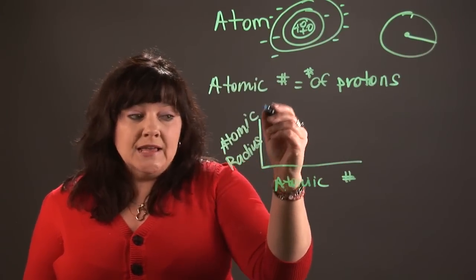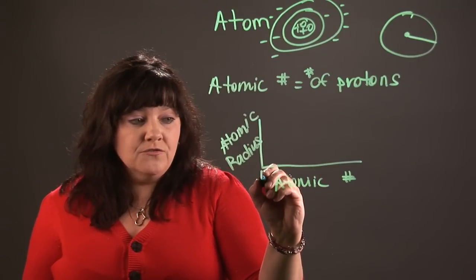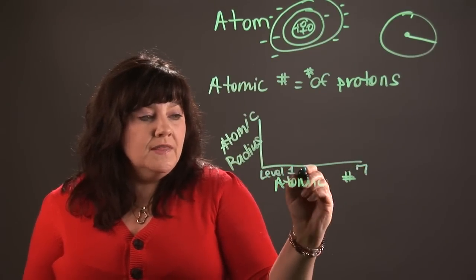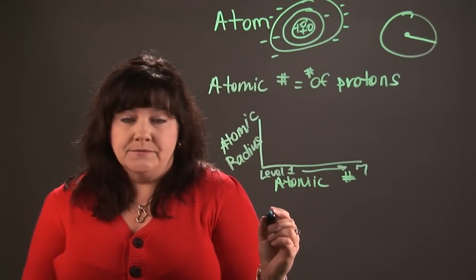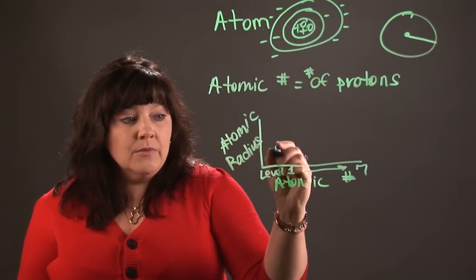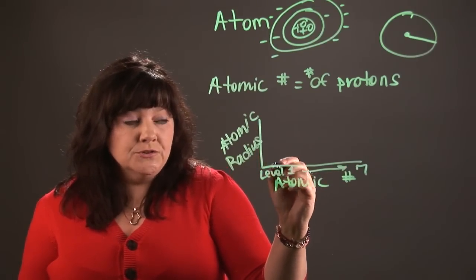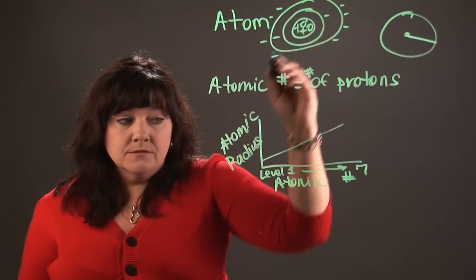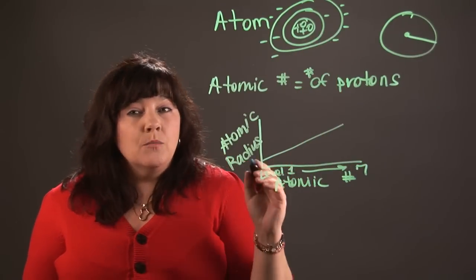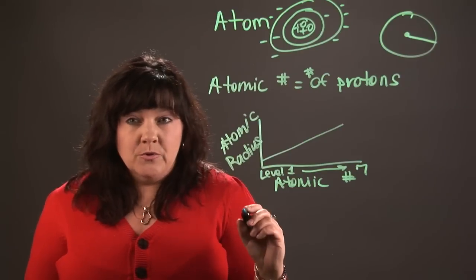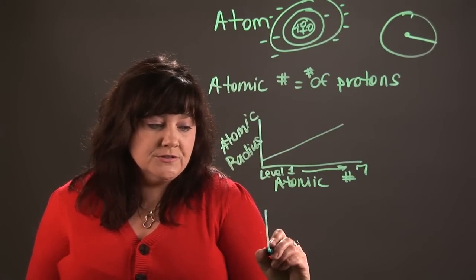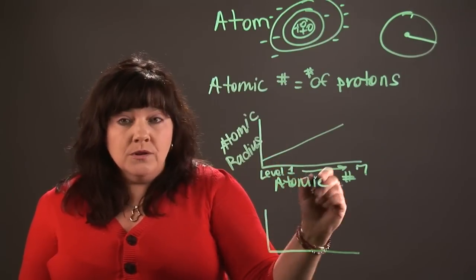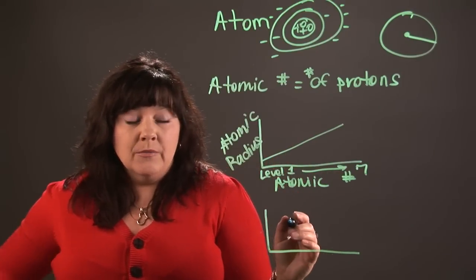As we go down the periodic table — from level one over to level seven — the atomic number is increasing, and so the atomic radius is actually going to increase because we're adding rings. But that's not the only relationship. Remember, we're looking at two different factors, and as we go down the levels, we're getting a larger atomic radius.